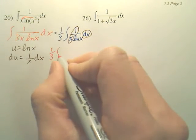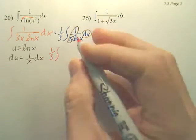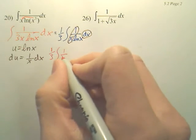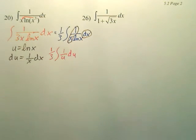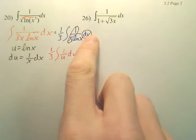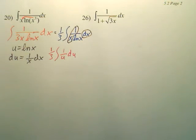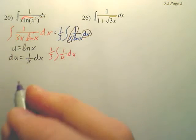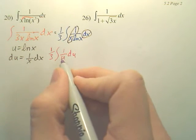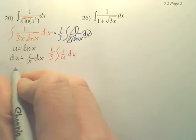Now, so that will end up being 1 over u du, because du is 1 over x dx and that's a u. Okay. The integral of 1 over u, hopefully you'll know by now,